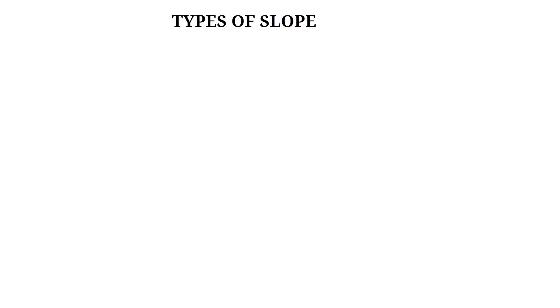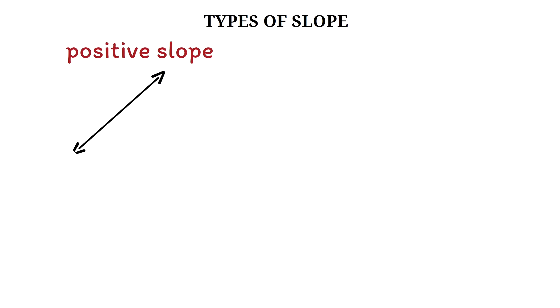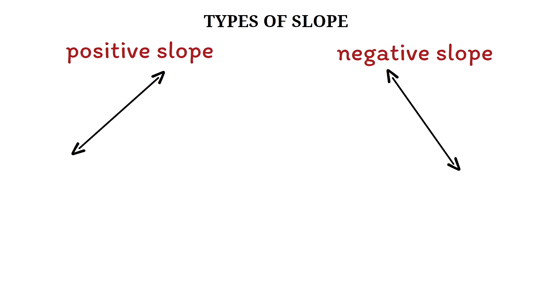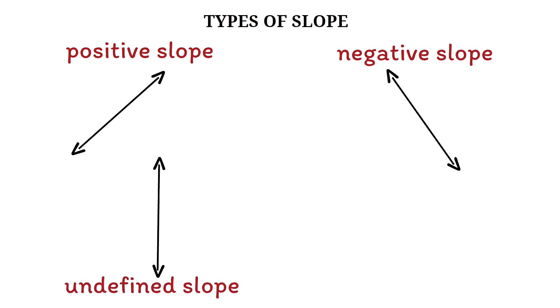Let's look at the types of slope. There are basically four types: the positive slope, the negative slope, the undefined slope, and the zero slope.